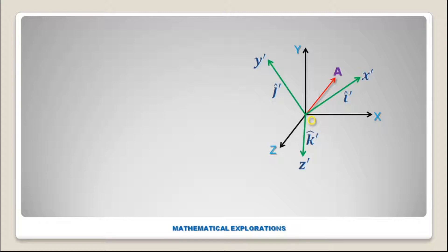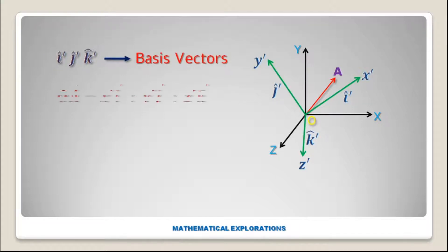The basis vector along Z-prime is k-cap-prime. Then the vector OA equals X-prime·i-cap-prime plus Y-prime·j-cap-prime plus Z-prime·k-cap-prime, where X-prime, Y-prime, and Z-prime are the components in the new coordinate system.